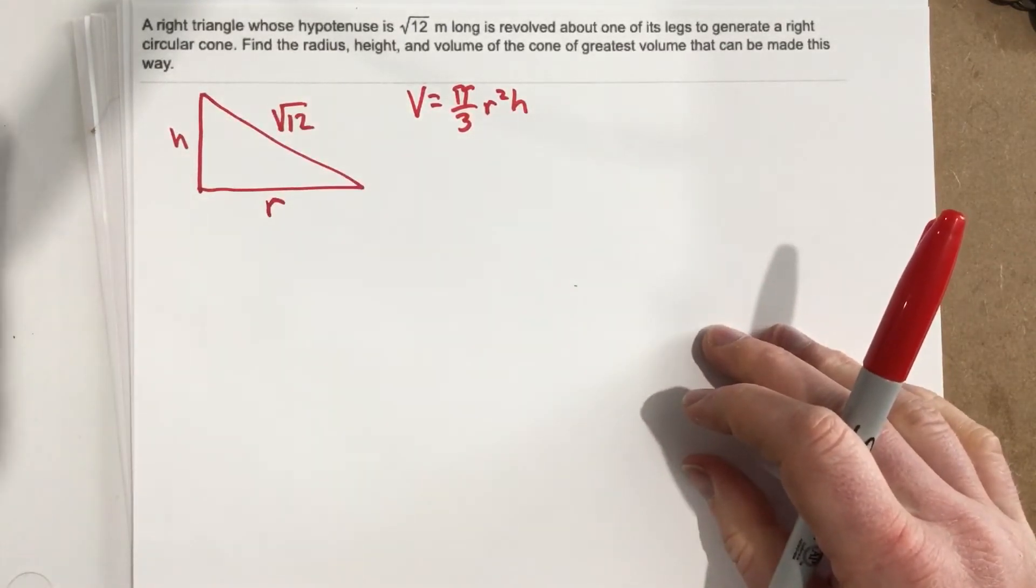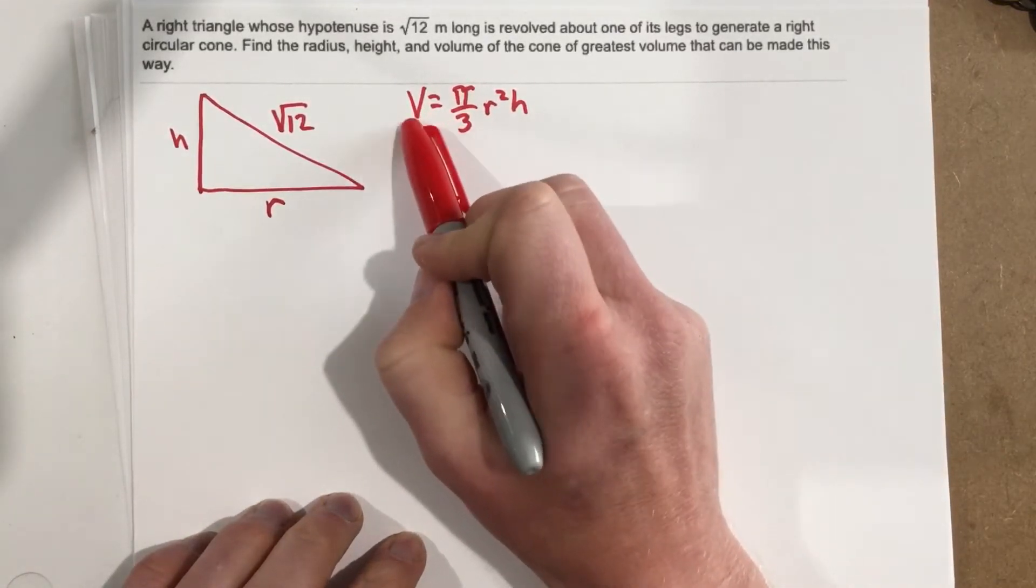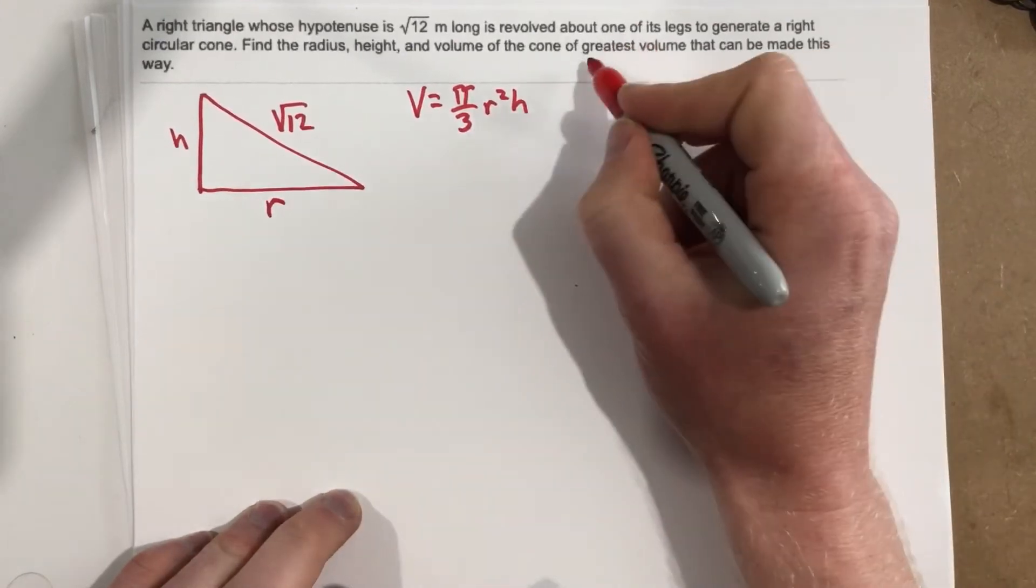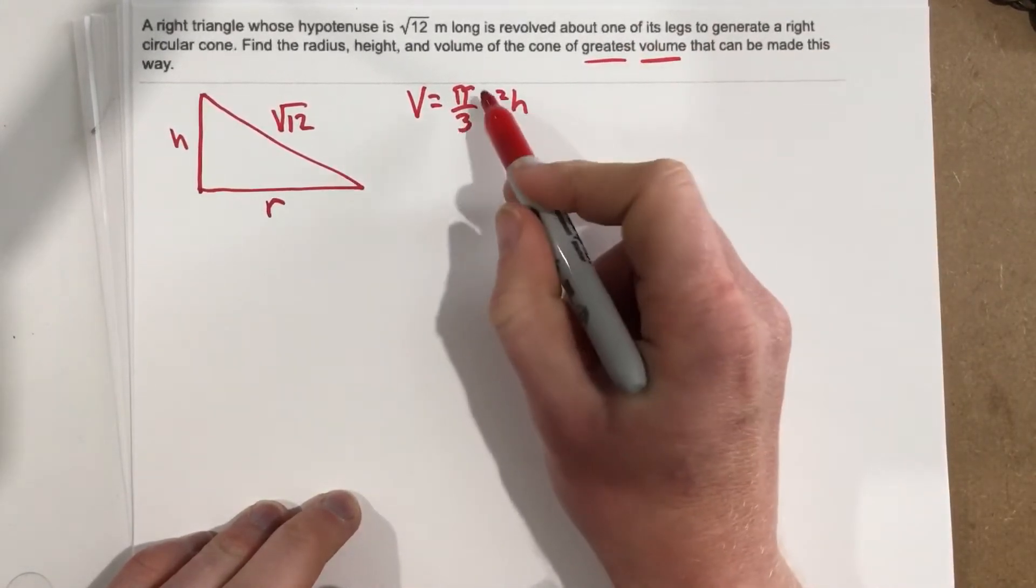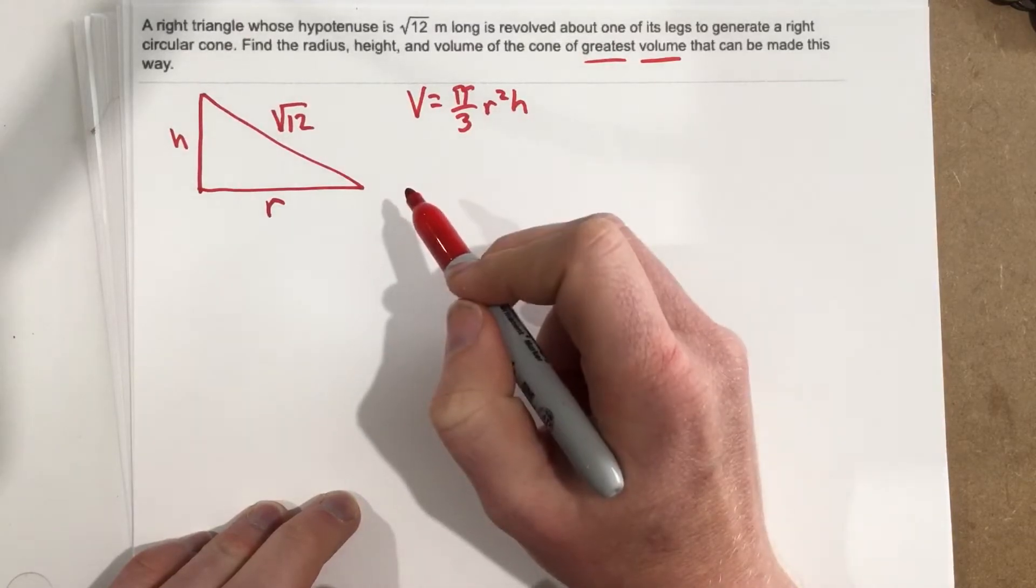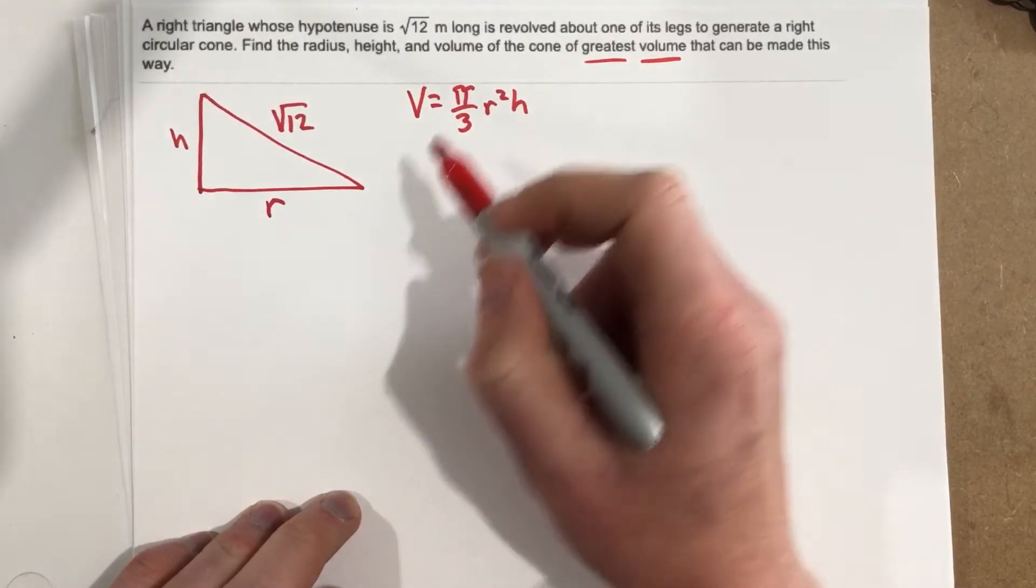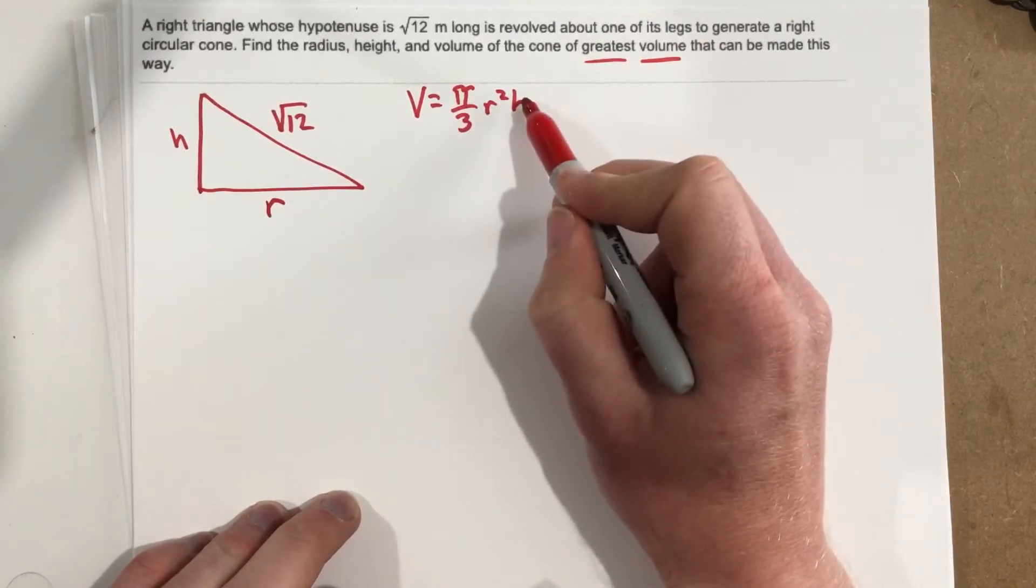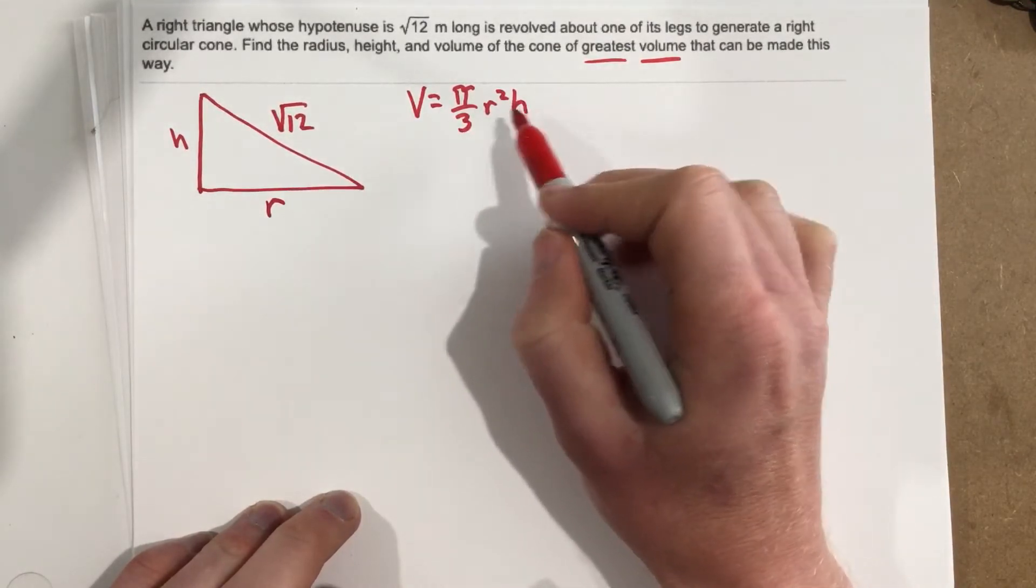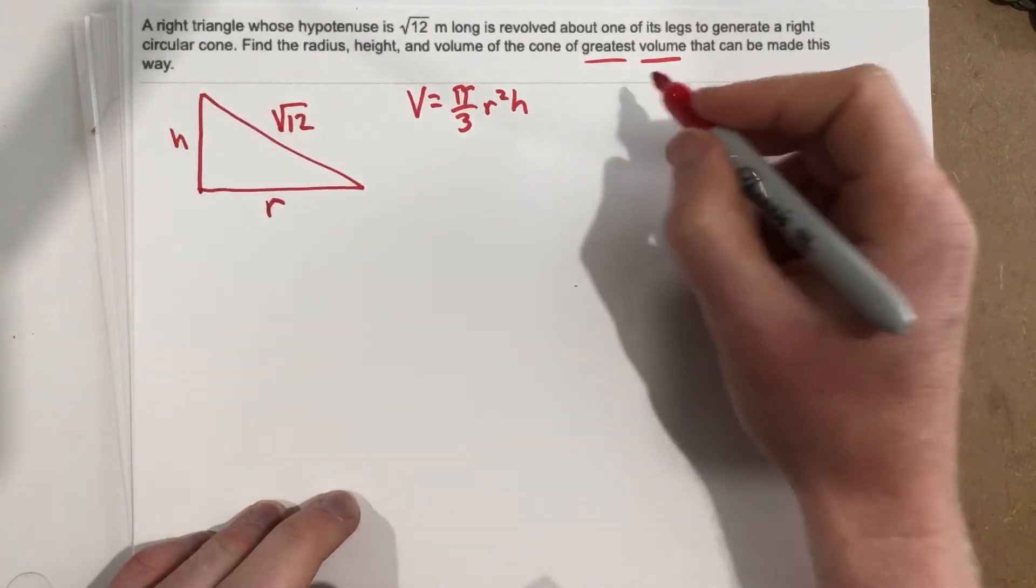So that's one of our equations, but remember we need to take the derivative of the volume because we want greatest volume—that's our key here. We want to take the derivative of the volume equation, set that equal to 0, and solve for one of our variables. Problem is we have two variables in here, so we need to get this down to having only one variable, which means we need another equation which we can get from this right triangle.